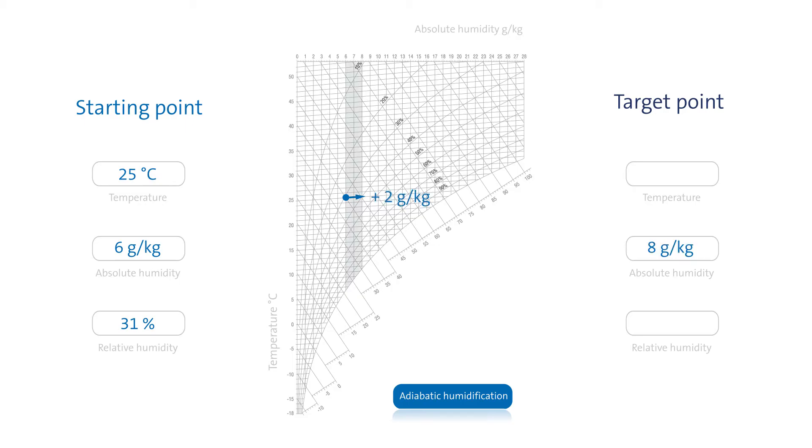Now we'll use an adiabatic method, that is by means of water evaporation, to add 2 grams of water per kilogram of air.